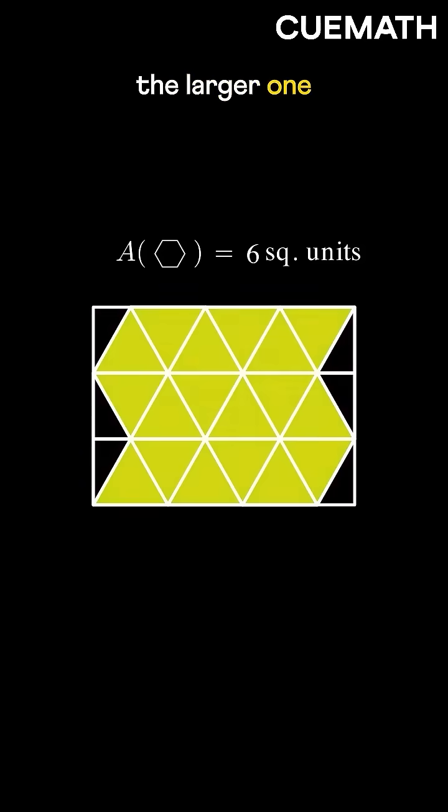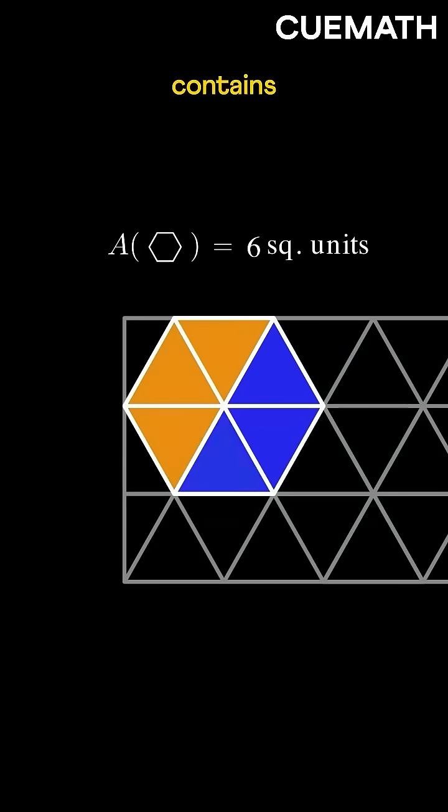The area of the larger one can be found using the hexagon. Since it contains six of these, each has an area equal to the total area divided by six, that is, one square unit.